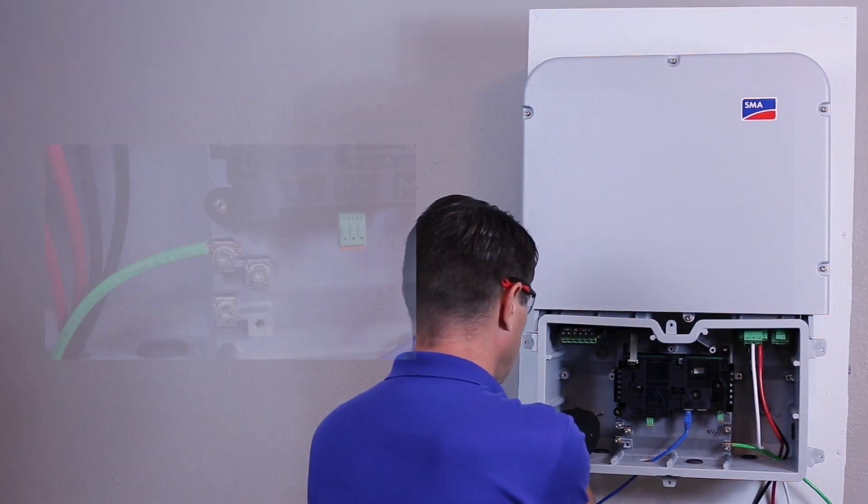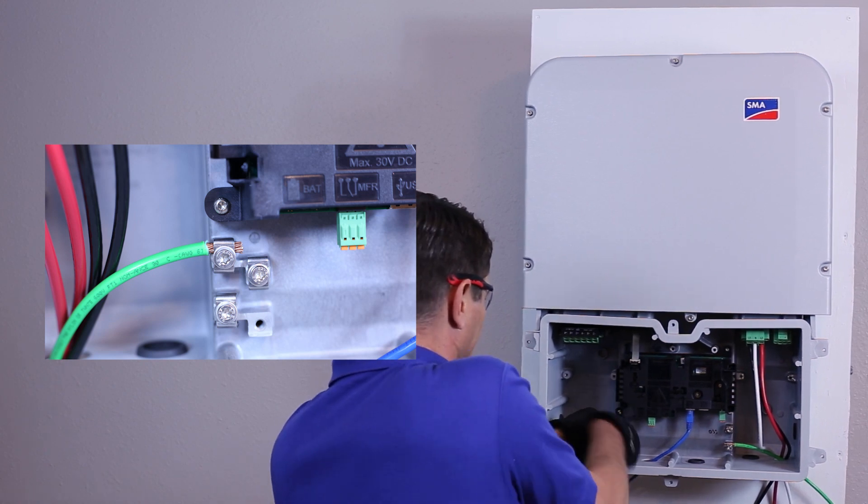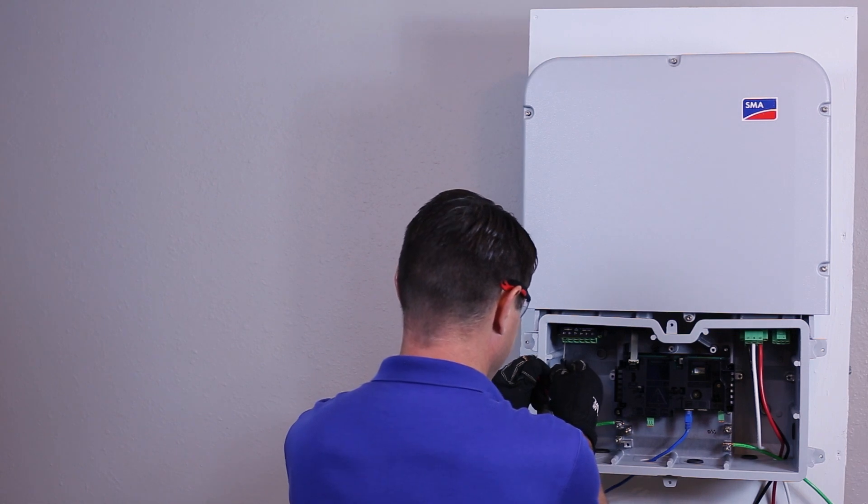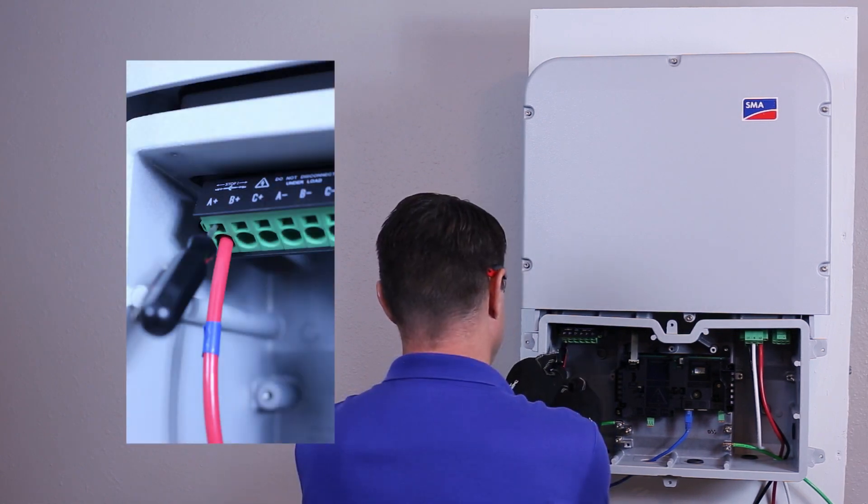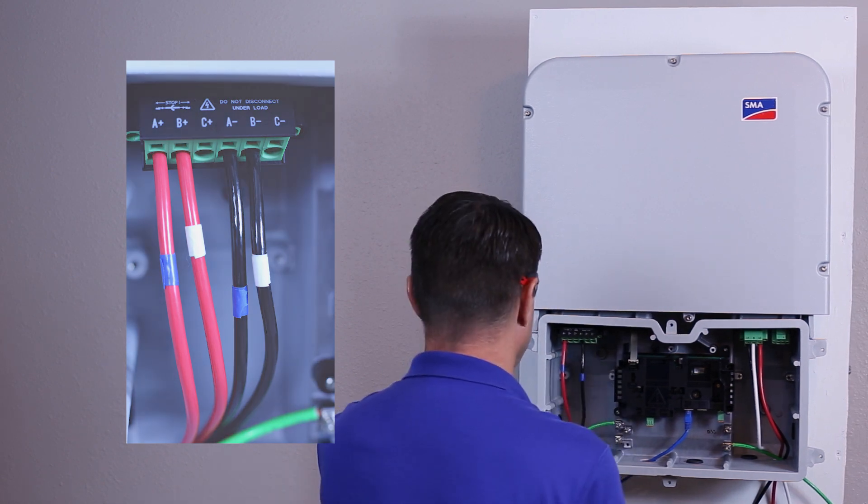Attach the DC ground conductors in the appropriate positions, ensuring the conductor is seated between the clamp and the washer and tight. Insert the DC positive and negative conductors for each string into the appropriate positions on the DC plug. Ensure each conductor polarity is correct and the string conductor pairings are correct.